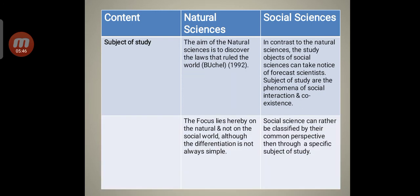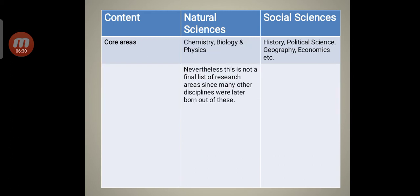Now understand the subject of study of both natural and social sciences. The aim of the natural sciences is to discover the laws that ruled the world given by Buchel in 1992. In contrast to the natural sciences, the study objects of social sciences can take notice of forecast scientists. Subject of study are the phenomena of social interaction and coexistence. In natural sciences, the focus lies hereby on the natural and not on the social world although the differentiation is not always simple. Social science can rather be classified by their common perspective than through a specific subject of study.